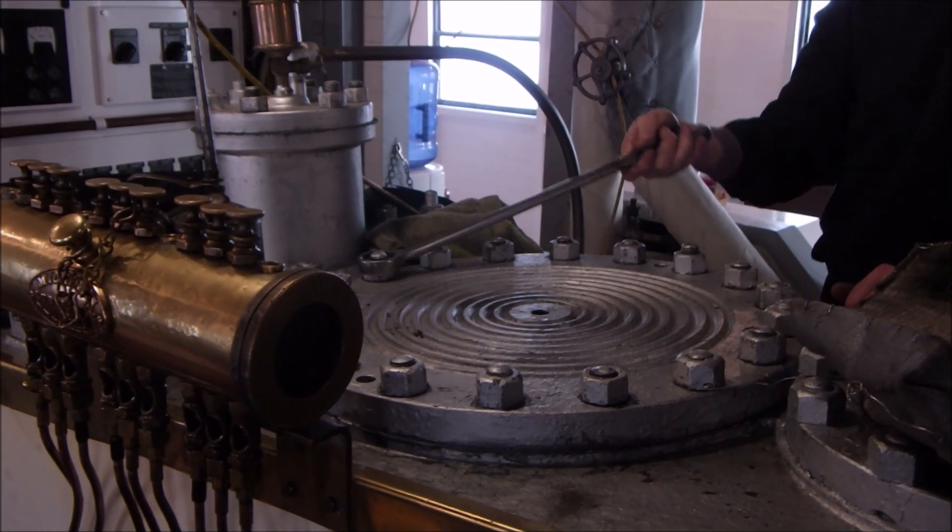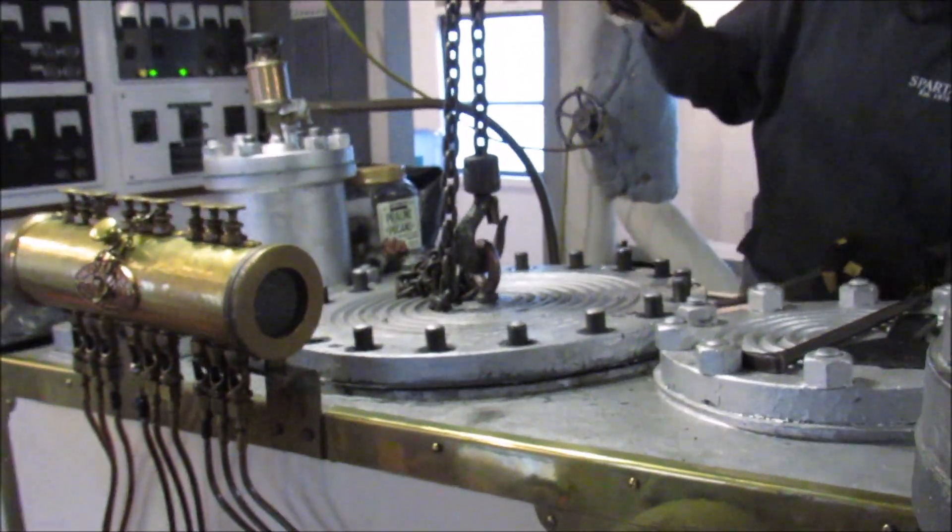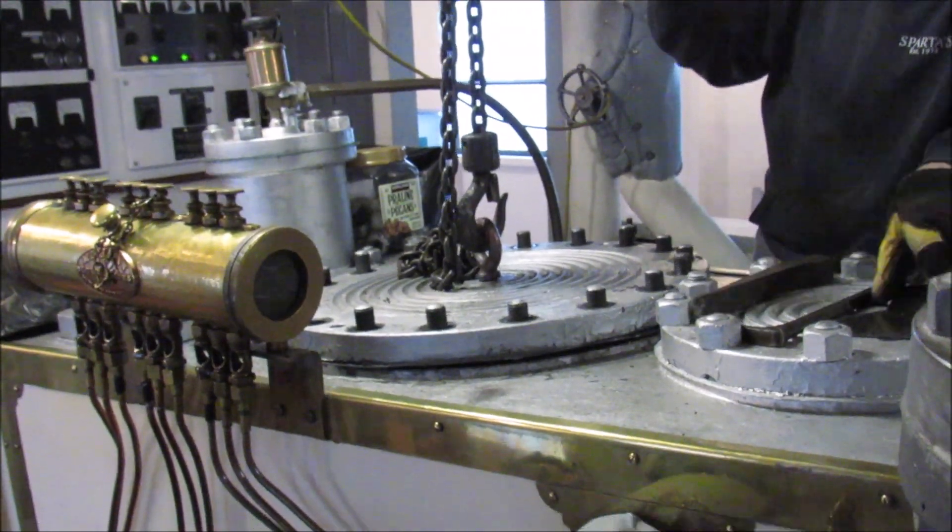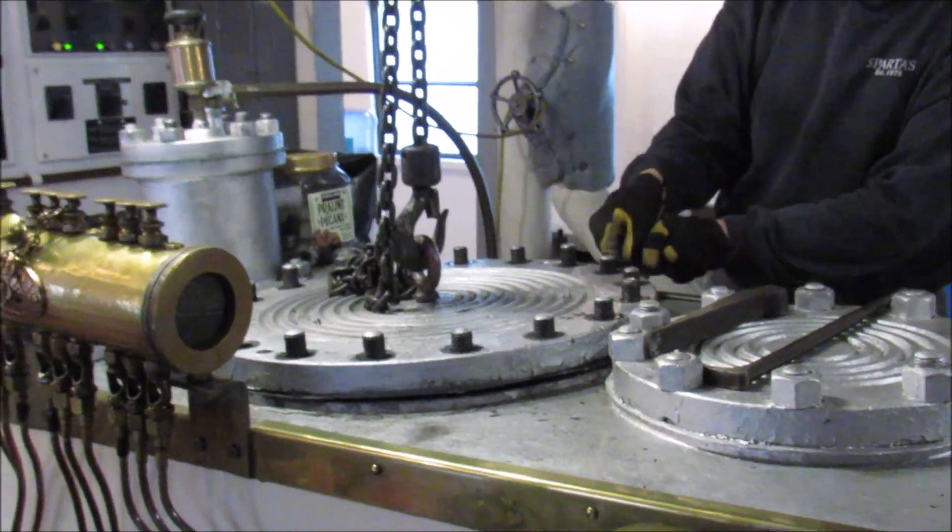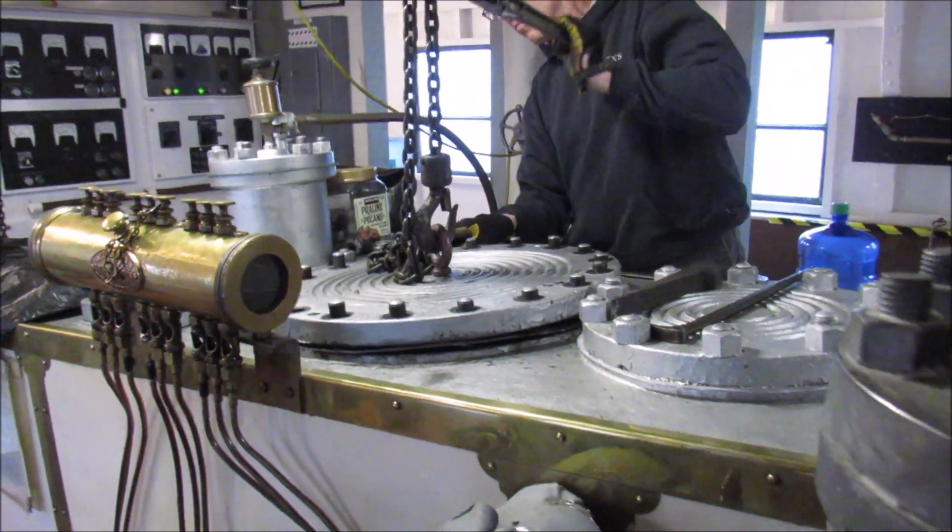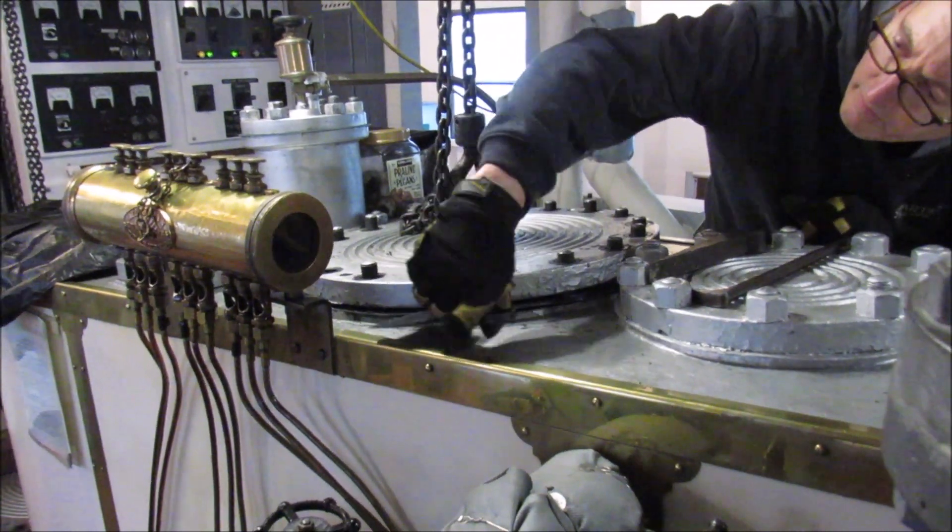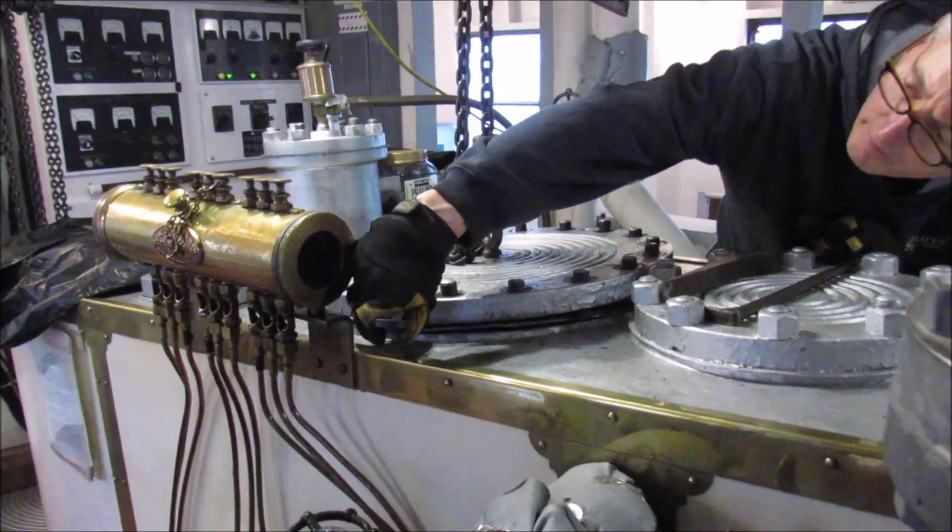This is a compound engine, so steam starts in the high pressure cylinder, then the valve directs it to the intermediate pressure cylinder, and then another valve directs it down to the low pressure cylinder. Today we will be looking at the intermediate pressure cylinder which is being opened right now, and then the intermediate pressure valve and the high pressure valve.